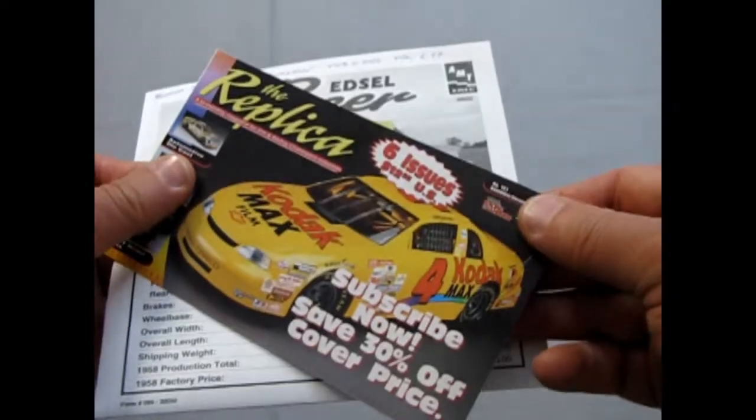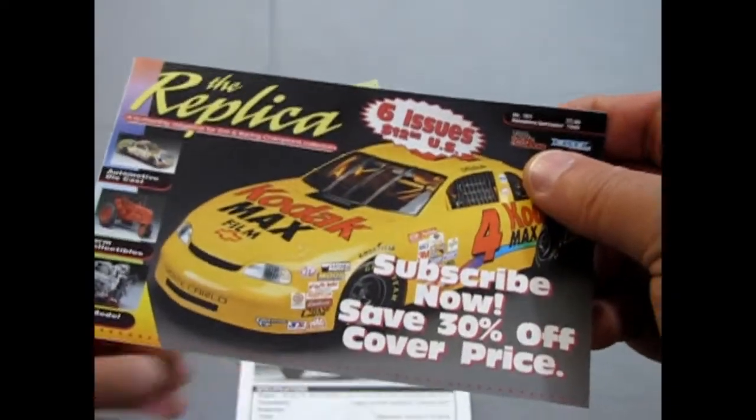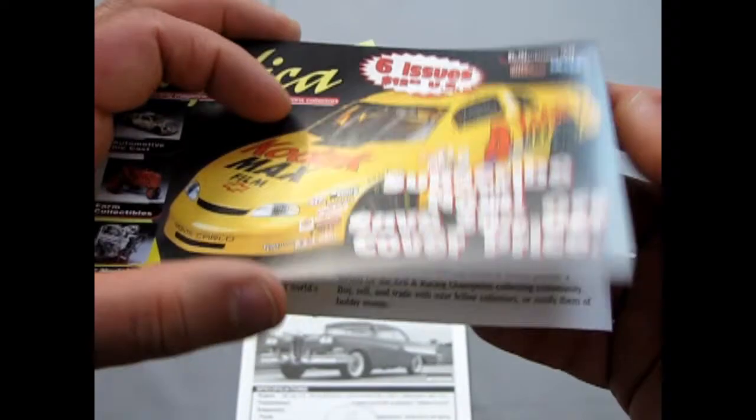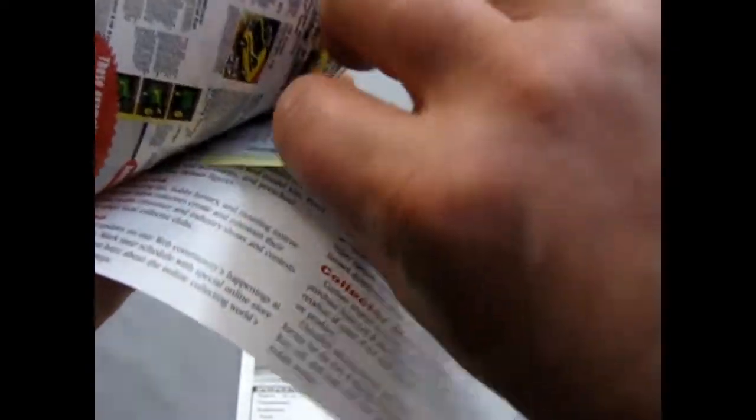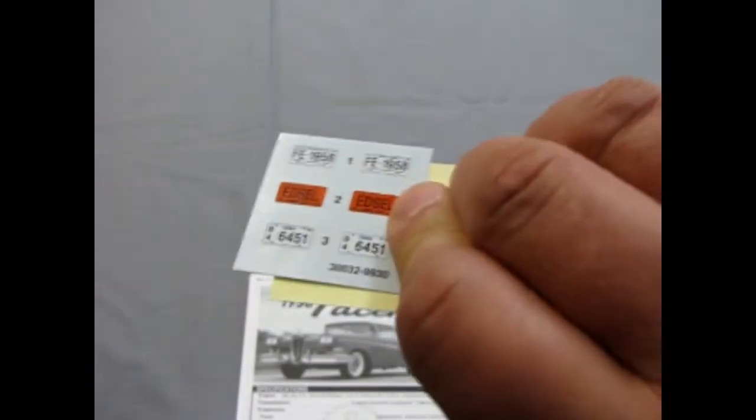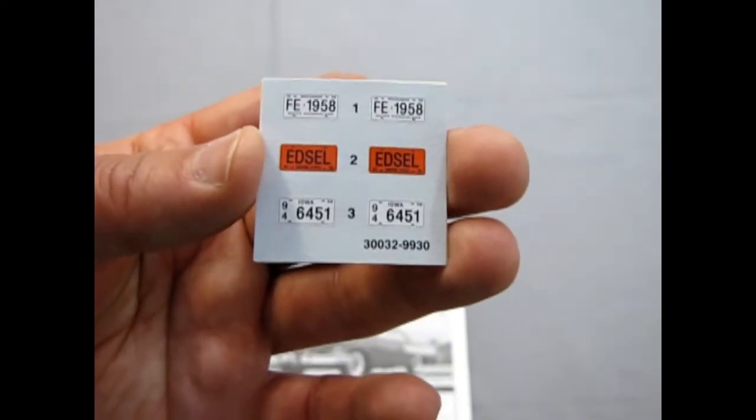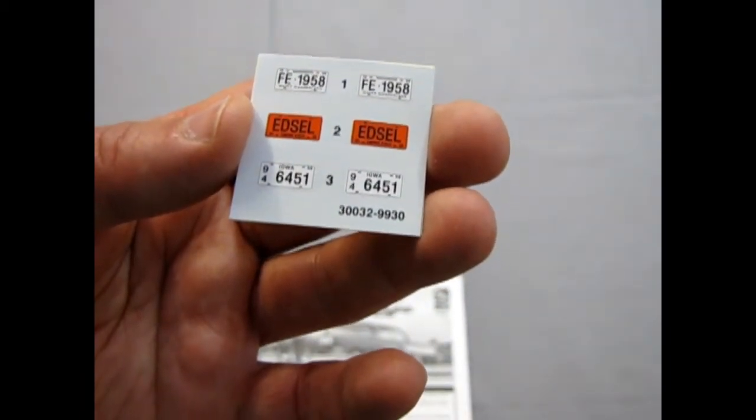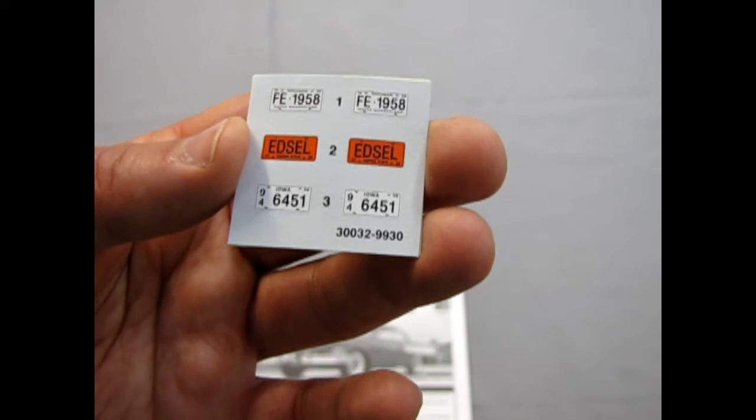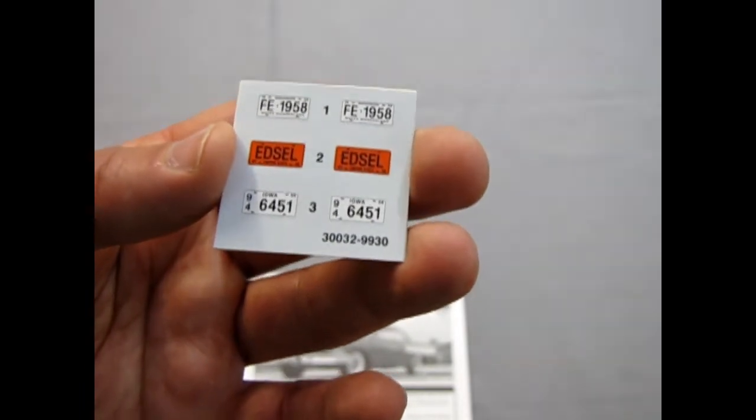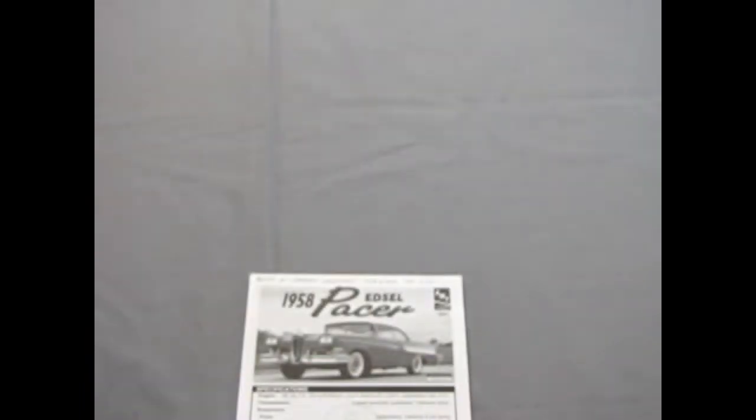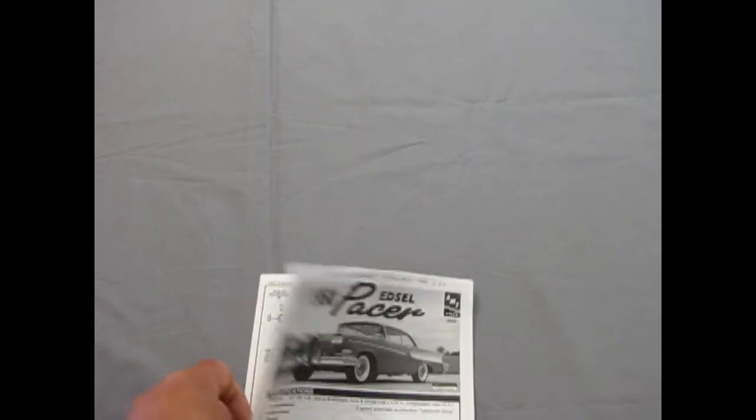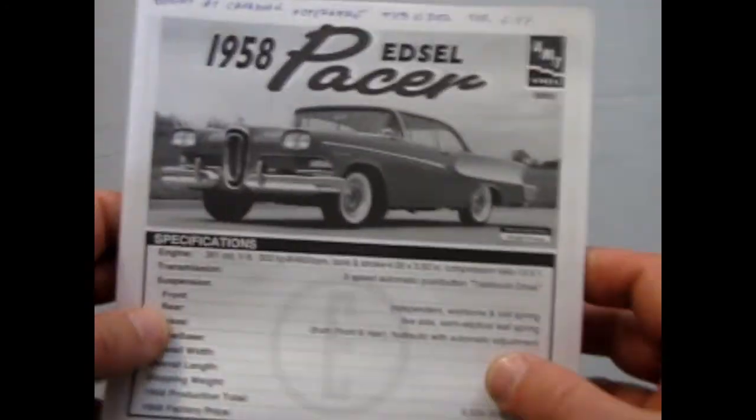It comes with a little flyer for the replica, which was an AMT Ertl magazine, and inside here are the license plates which says FE 1958 Edsel and Iowa 6451, and the top license plate is from Michigan. I'd like to see some Canadian license plates but anyway.